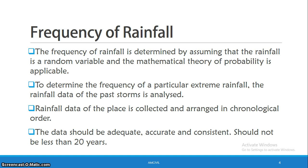At least 20 years of data is needed to control the frequency analysis. We have to arrange that data in chronological order. So, we can control the rainfall frequency analysis.